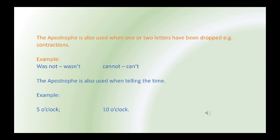That is, you write the word was, n, apostrophe and then t. Cannot can be shortened as can apostrophe t. The apostrophe is also used when telling the time. Five o'clock. After O, you put an apostrophe and write the word clock.